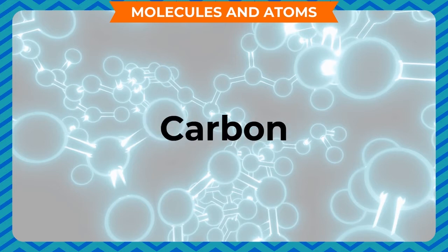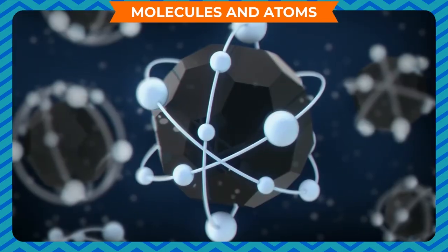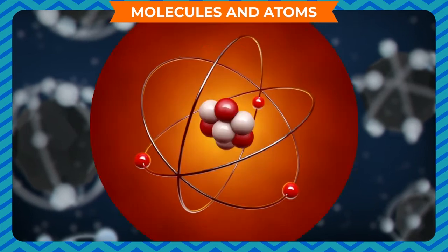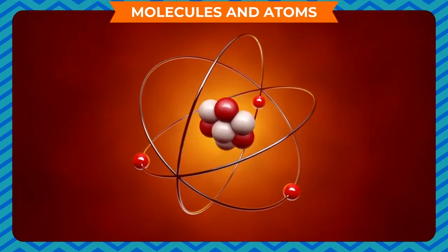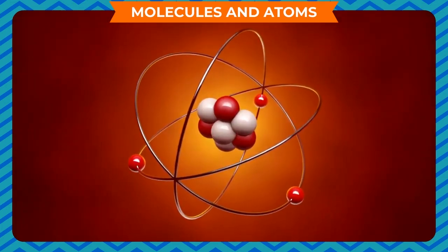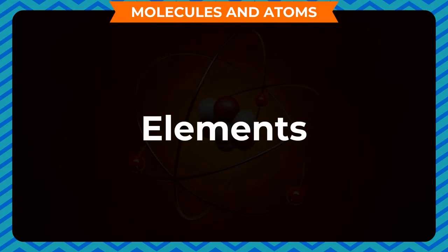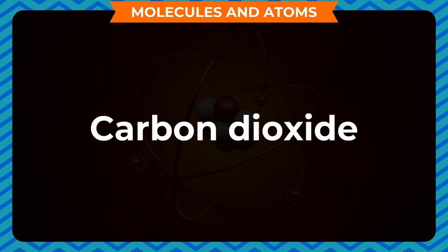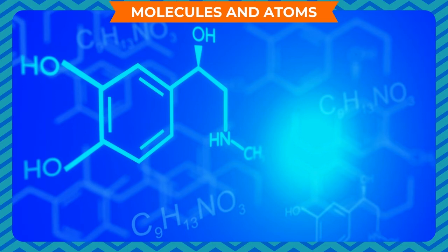Substances which have only one type of atom are called elements. Some substances like sugar, water, and carbon dioxide are made up of two or more types of elements.